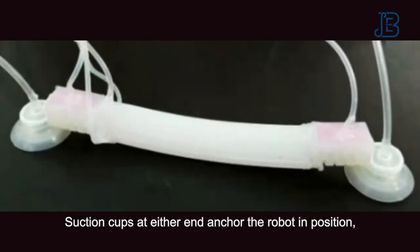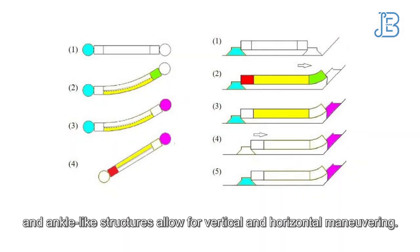Suction cups at either end anchor the robot in position. Ankle-like structures allow for vertical and horizontal maneuvering.